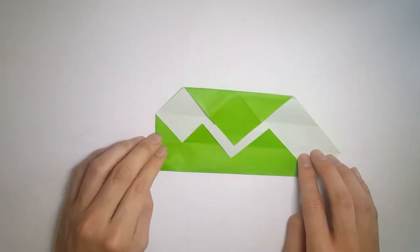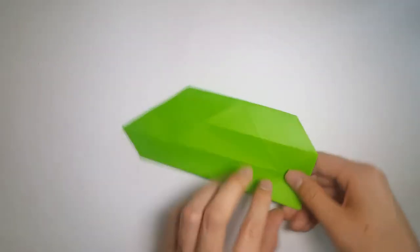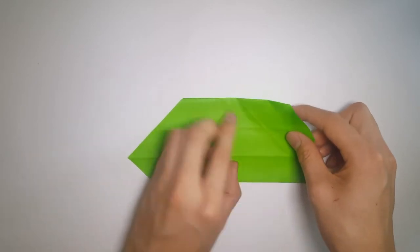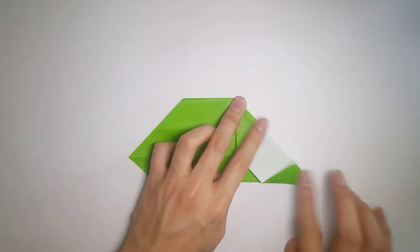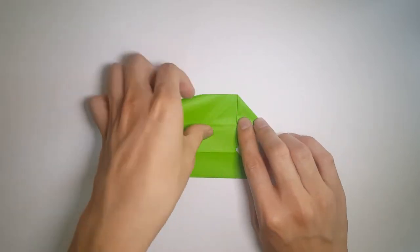Now we're going to turn the piece of paper over, and then following the creases, fold them backwards. Just following the crease, folding it back, and it should look something like this.